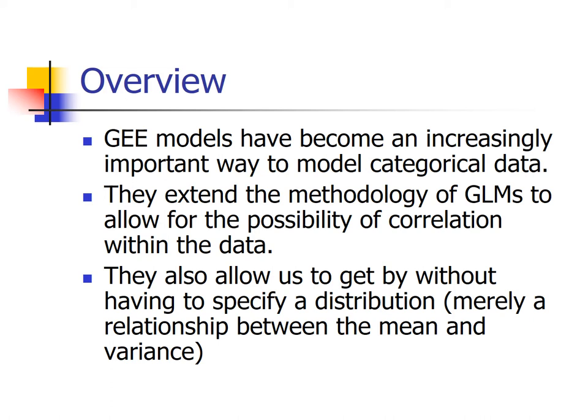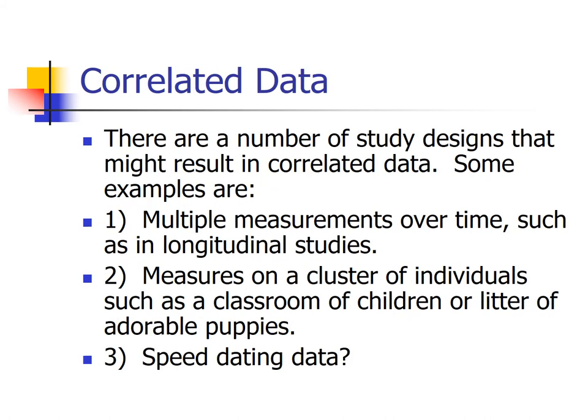These generalized estimating equations — GEE models — extend what we talked about last week by allowing for the possibility of correlation within data. One of the big assumptions underlying a lot of our modeling techniques so far has been the independence assumption, and there are plenty of real-life situations in which the independence assumption is violated. GEEs also allow us to get by without having to specify a distribution — instead, we just specify a relationship between the mean and the variance.